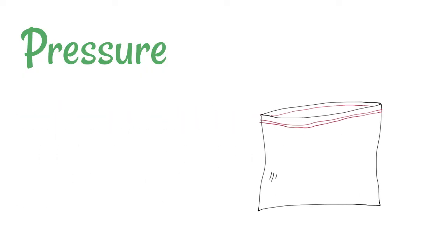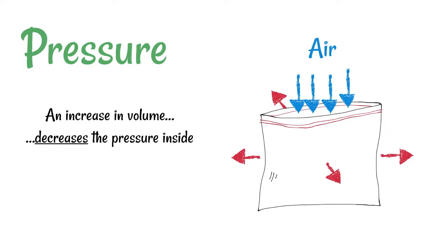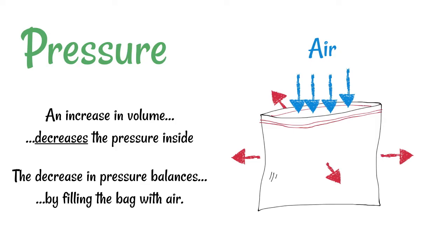To understand how we breathe using the lungs, we've got to have some understanding of pressure. Imagine a little food bag — the sort of thing you might pack your sandwiches in. Imagine that we pull on this in every direction; we know that it is then going to fill with air. We've increased the volume, and what this has done is decreased the pressure inside of the bag.